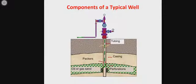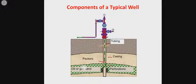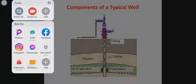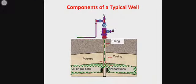Let's continue with the components. Here you have a typical well showing the elements of the production system: the reservoir, the tubing, the casing, and the well head.